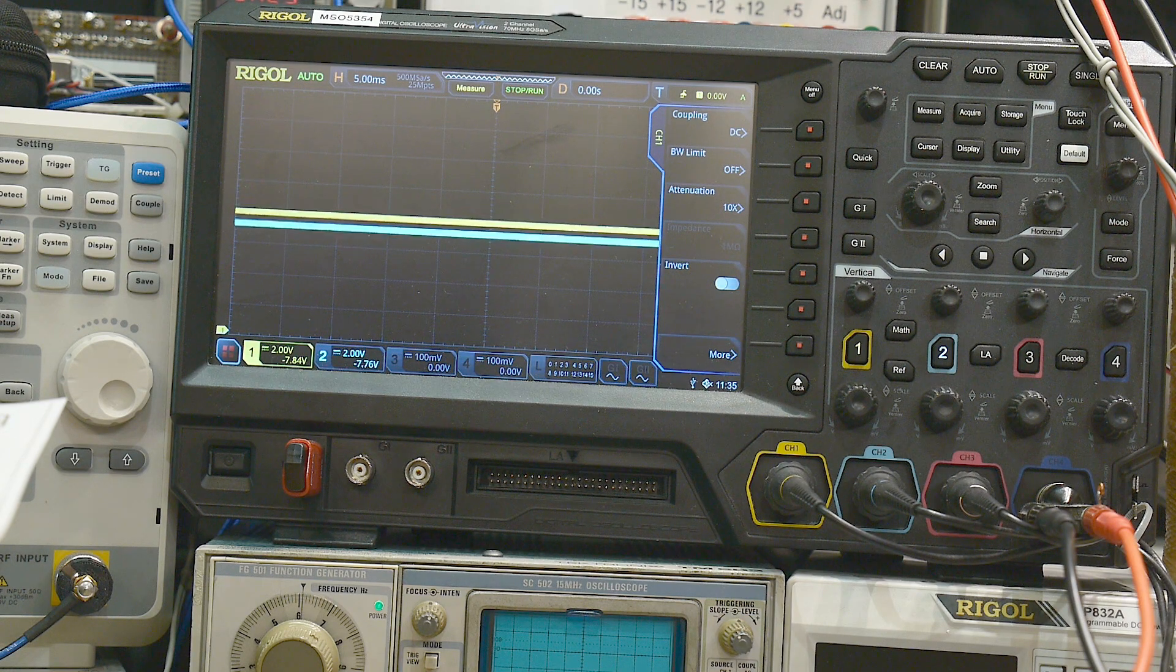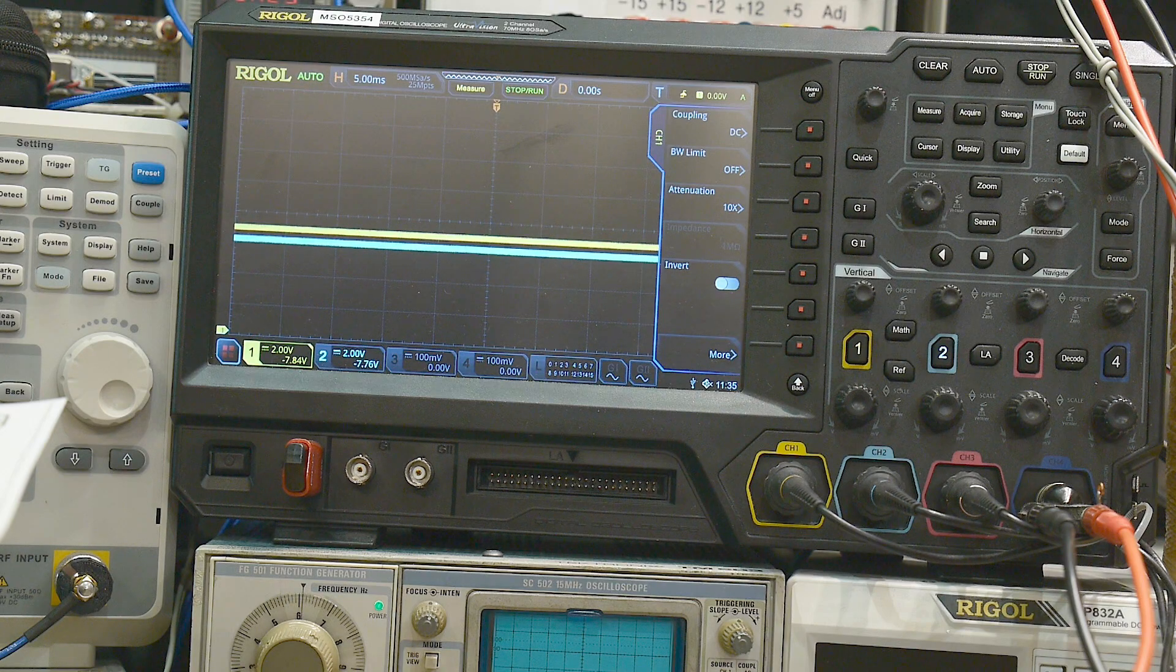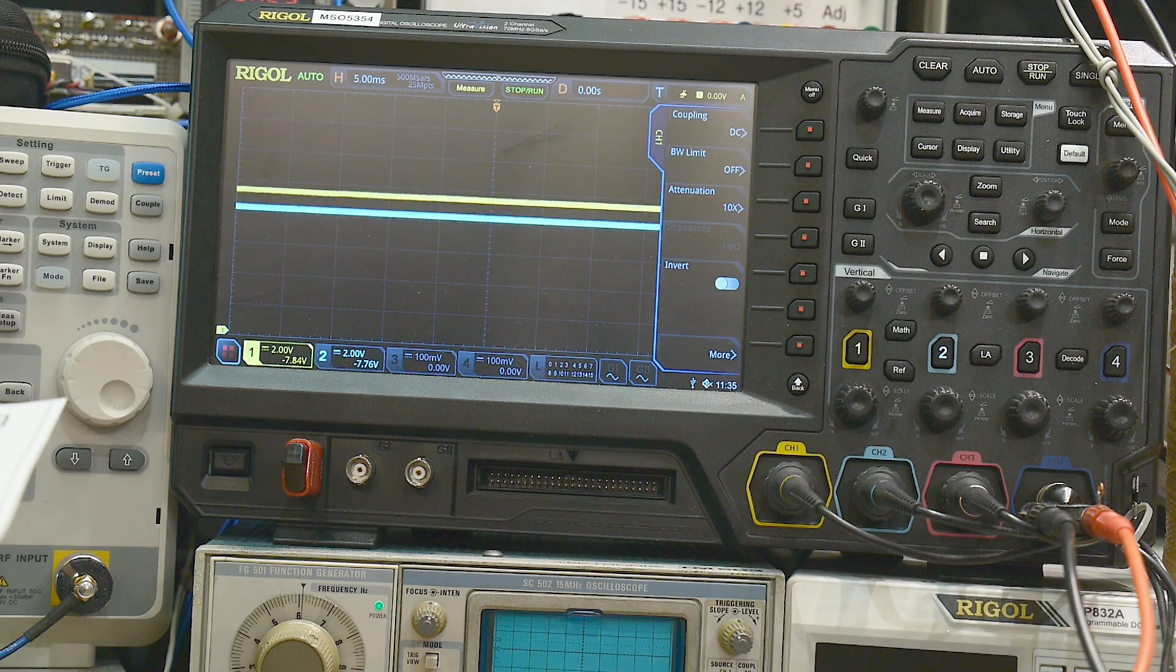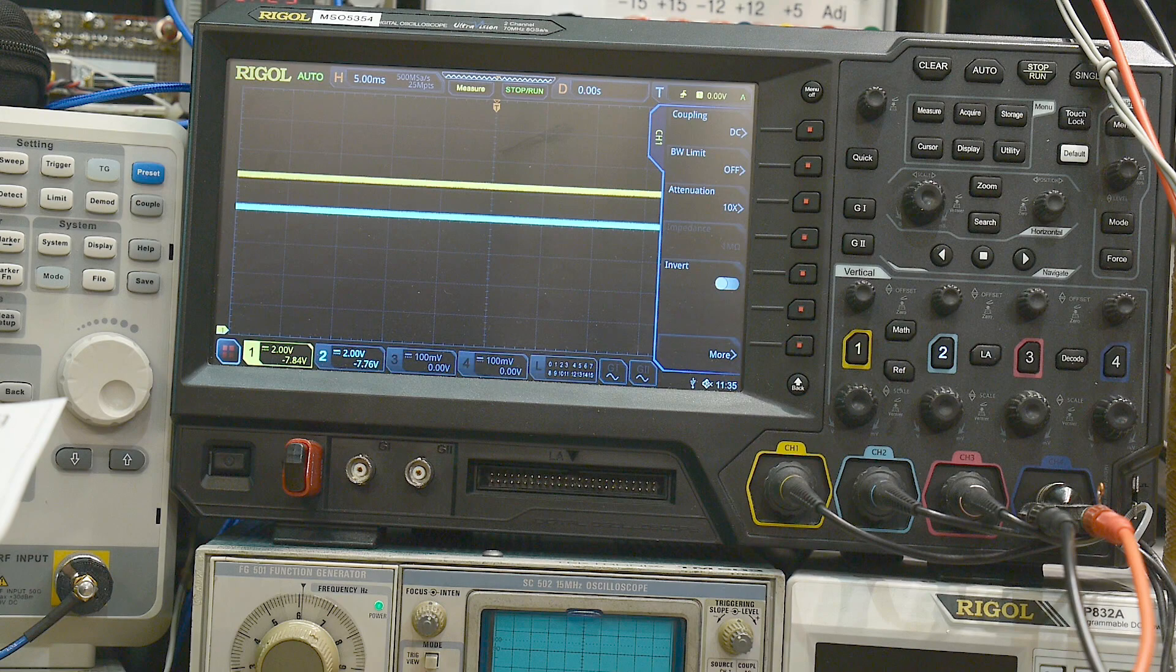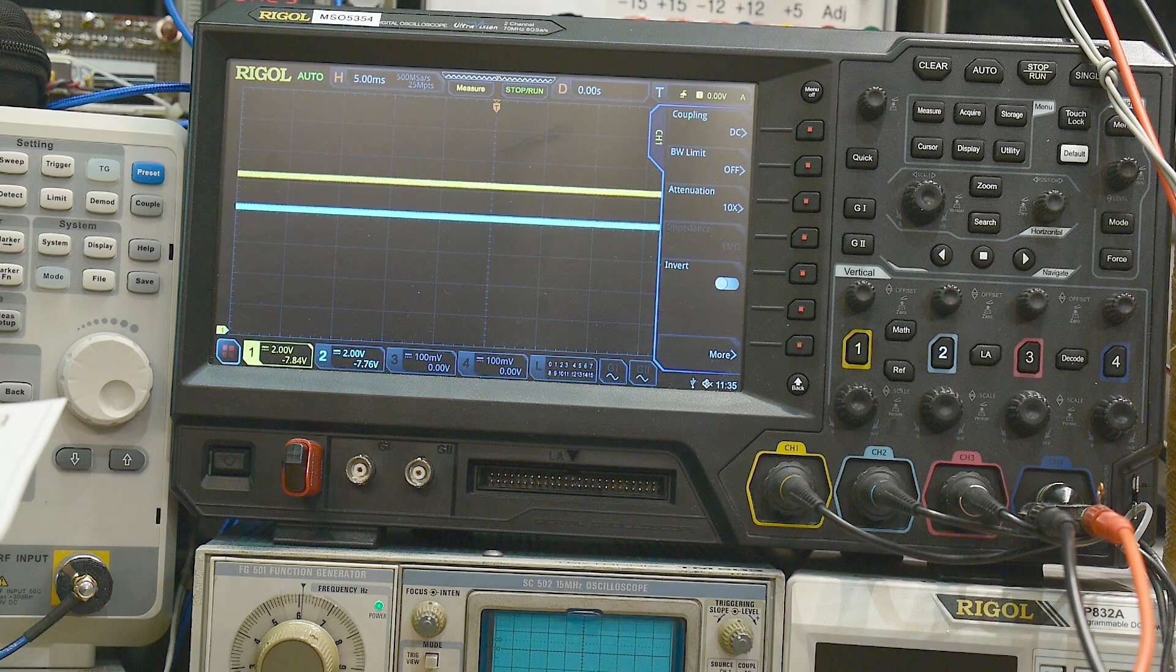Now if our power supply droops, then the output will droop as well and they'll always be about a volt difference between the input and the output. But for it to regulate, you need to be up here somewhere. So I think everybody understands that. What I want to demonstrate today is: what if we have a ripple?